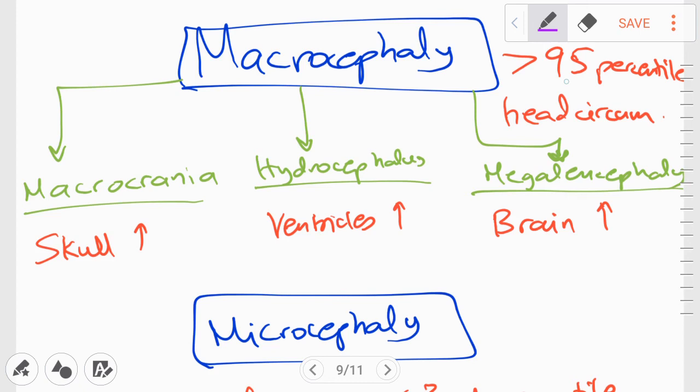So now we can move on to macrocephaly. Macrocephaly is characterized by the head circumference being more than the 95th percentile. There are three main causes of macrocephaly. Macrocrania, which means that we have an increase in the thickness of the skull itself. And this is mostly due to diseases of the bone metabolism or hypertrophy. For example, achondroplasia, fragile X syndrome, or osteopetrosis are all causes of macrocrania, which further leads to macrocephaly.